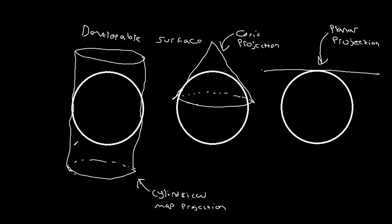Alright, so again, we have cylinder where we wrap it up like a cylinder, drop it on. We have a conic projection where we almost make like a party hat. And then we have this planar projection where we just take the developable surface and we just set it flat on the earth.